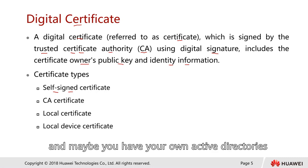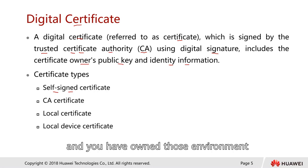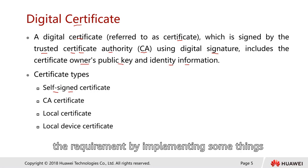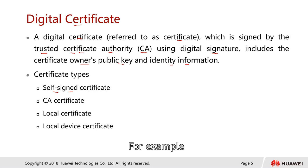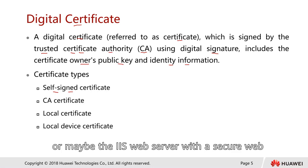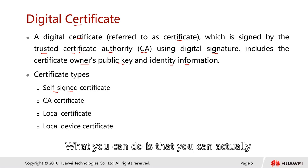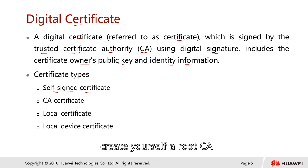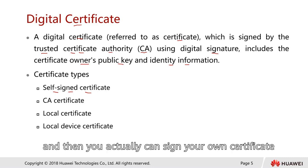Maybe you have your own Active Directories and your own Windows environment, and you just want to fulfill some requirements by implementing services such as Remote Desktop Gateway or maybe IIS web server with a secure web. What you can do is create yourself a root CA and then sign your own certificate.